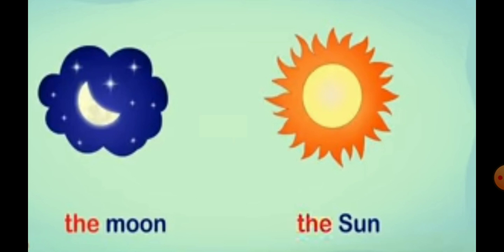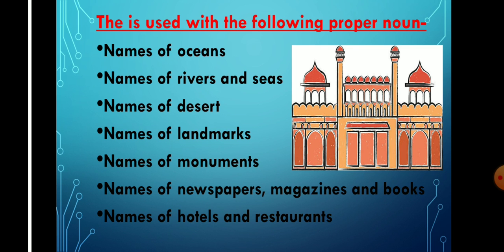There are some proper nouns before which we use THE: names of oceans, names of rivers and seas, names of deserts, names of landmarks, names of monuments, names of newspapers, magazines and books, and names of hotels and restaurants.